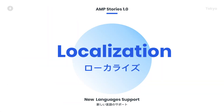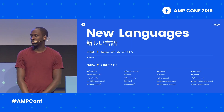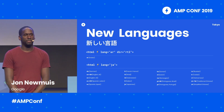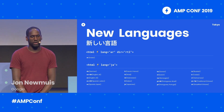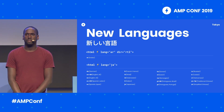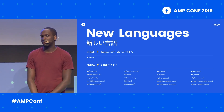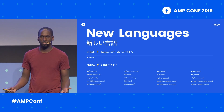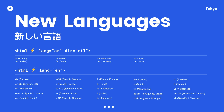When we launched the origin trial and developer preview last February, it was in English only. We now support 21 different locales, but more importantly, we've built a generalizable framework around localization in AMP so that AMP Stories system-provided user interfaces can be translated into any language easily. The framework not only includes the ability to add new translations, but also includes the ability to flip the user interface for right-to-left languages like Arabic.